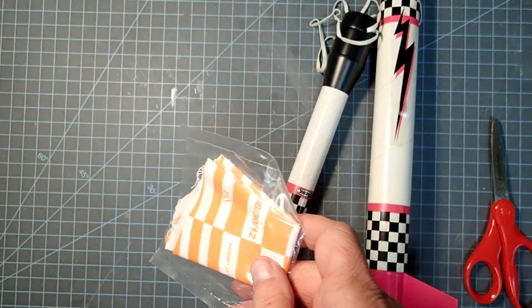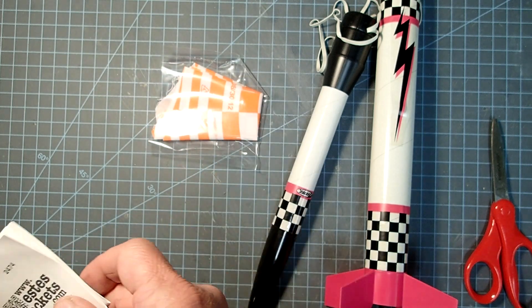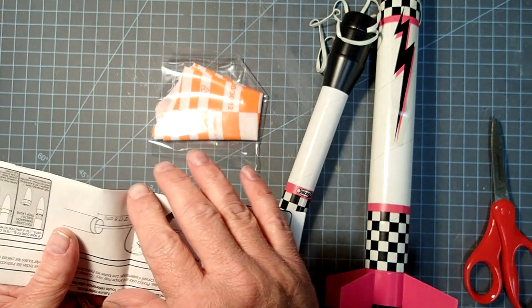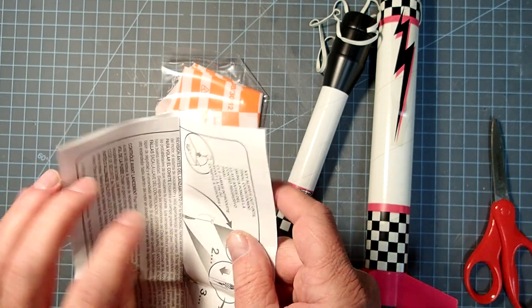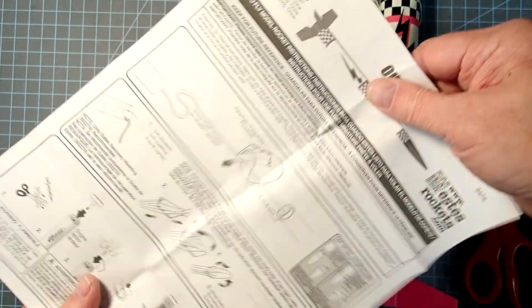All right, so we do have the parachute here that we'll have to quickly assemble, and we'll take a look here on our instructions and make sure there's nothing else. Yep, that's about it. Put the parachute on.